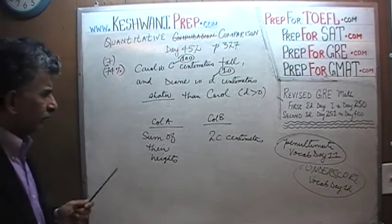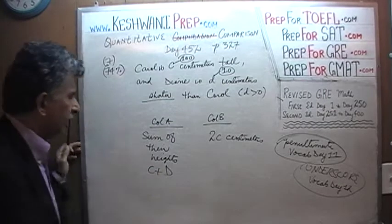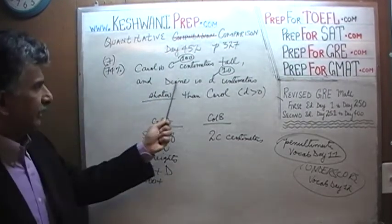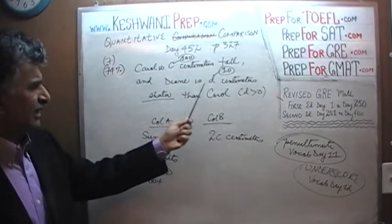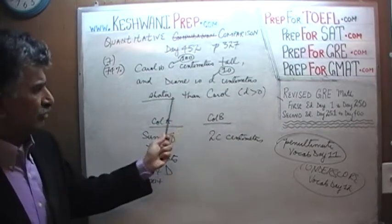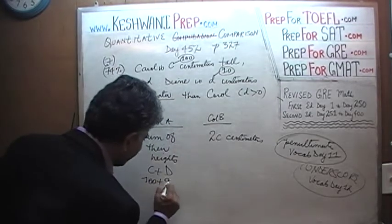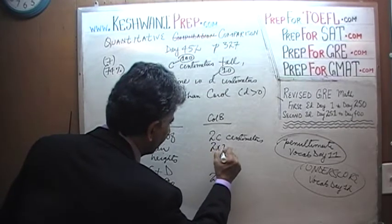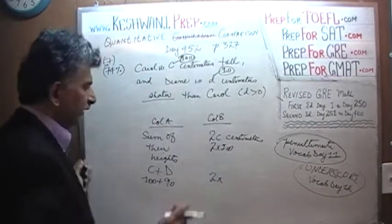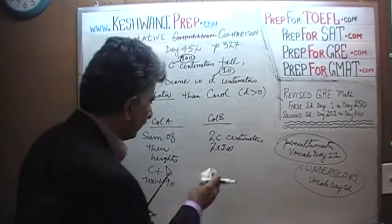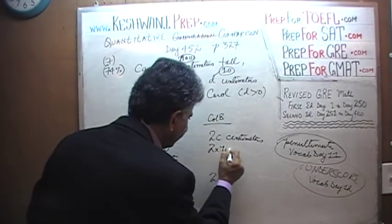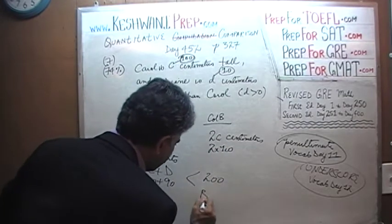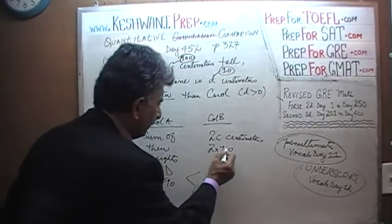Now we look at their sum. Carol plus Diane is what we are interested in. Carol is 100 centimeters tall. Diane is D centimeters shorter than Carol — if she is 10 centimeters shorter, then Diane must be 90. So we have 190 versus 2 times C. 2 times C, which is 100, gives us 200. So we are comparing 190 versus 200 — 200 is bigger. The answer is B.